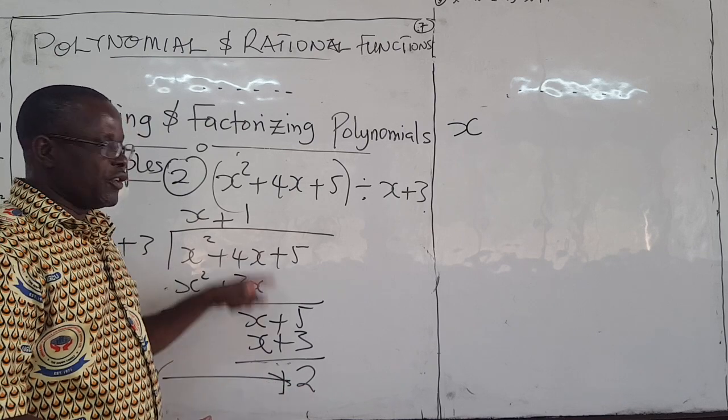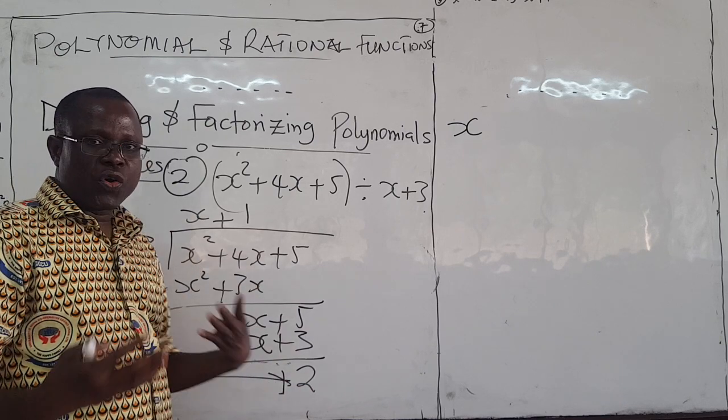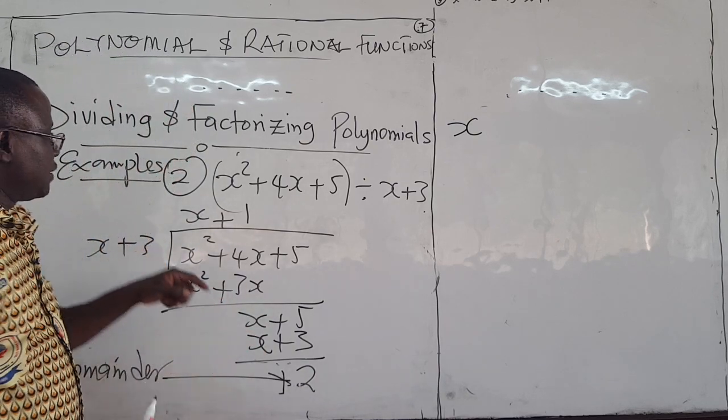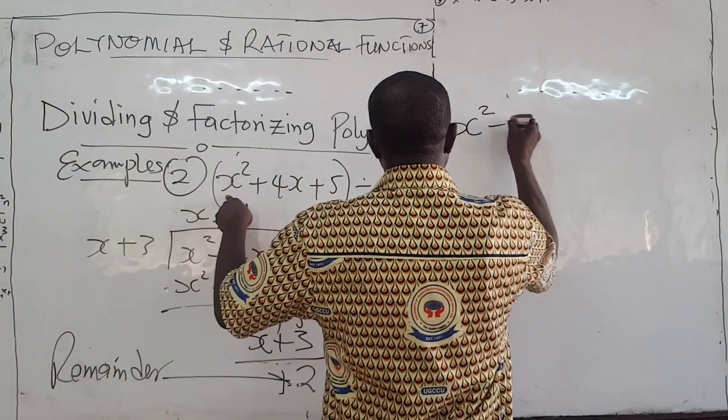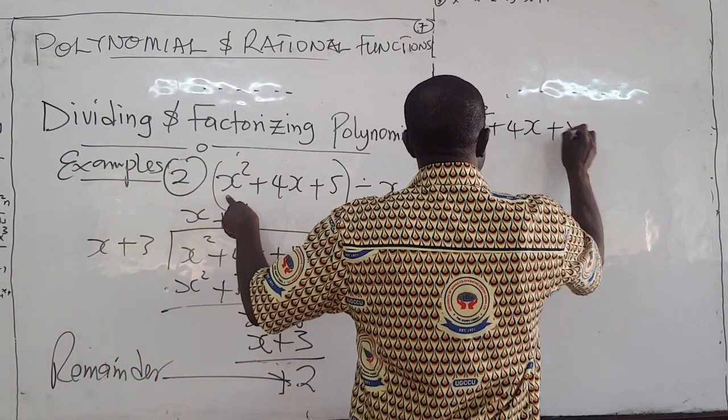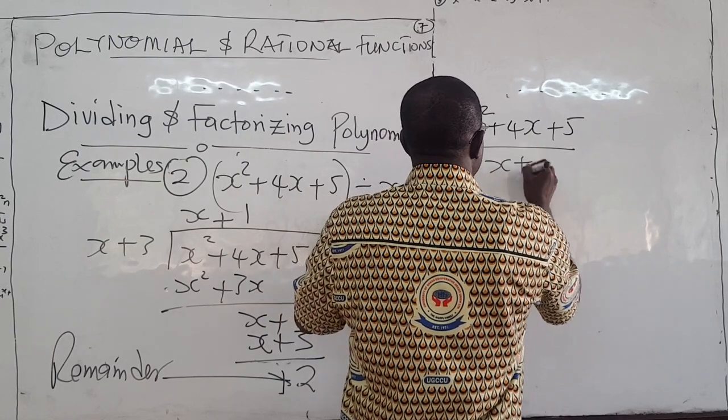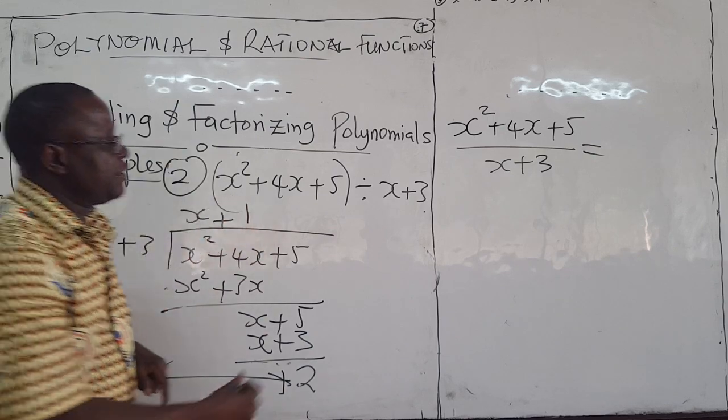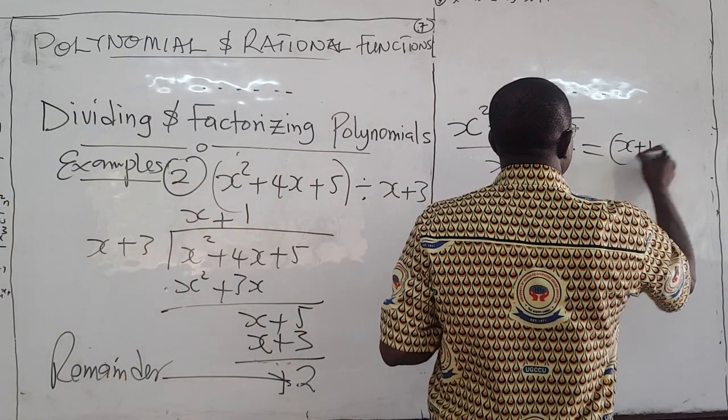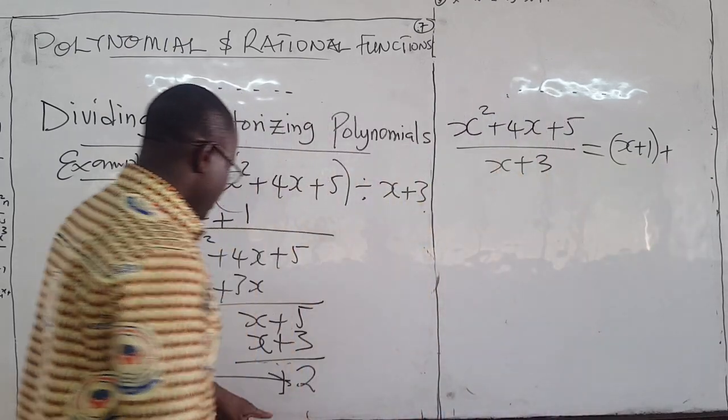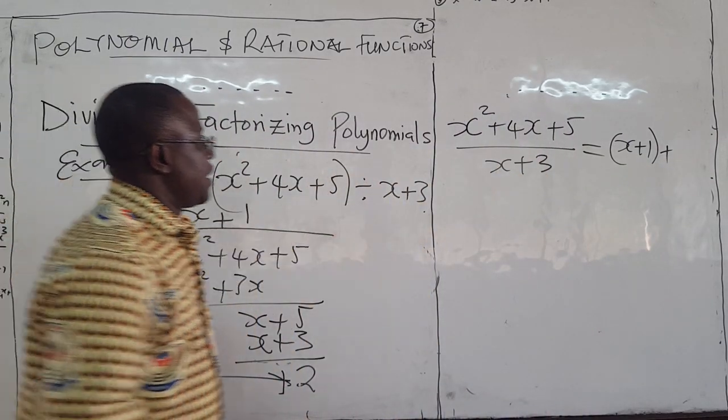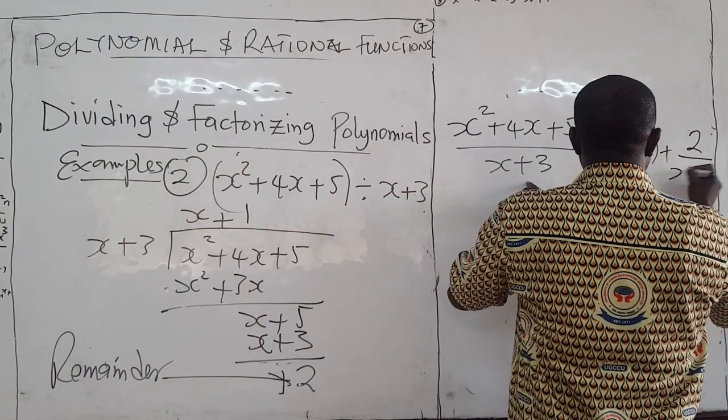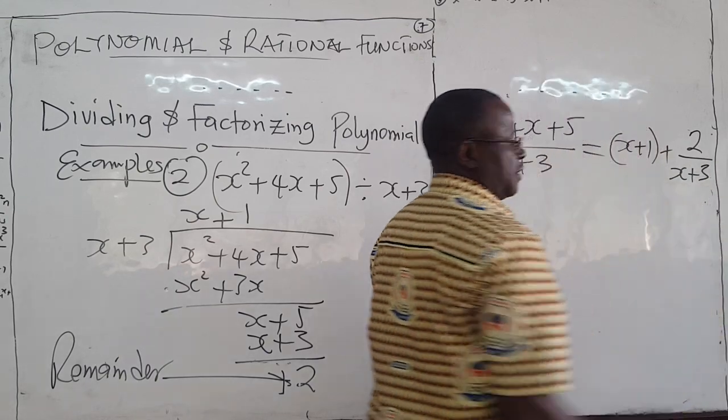Later on, we'll talk about the remainder theorem. How do you find this guy, this remainder without actually going through this process? We use what is called a remainder theorem to help us do that. But, for now, this is what this means. It means that if I have x squared plus 4x plus 5 and I divide it by x plus 3, I'm going to get this guy here. I'm going to get x plus 1 with a remainder of 2 over the denominator, over this guy. 2 over x plus 3.